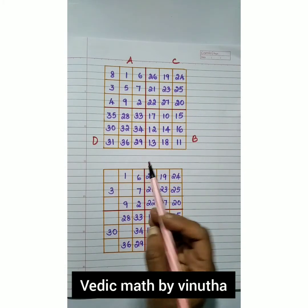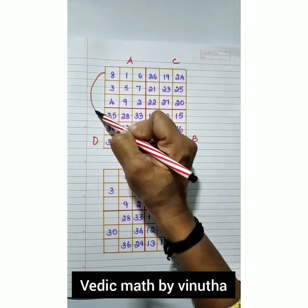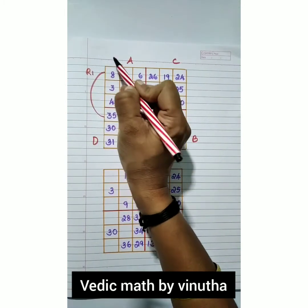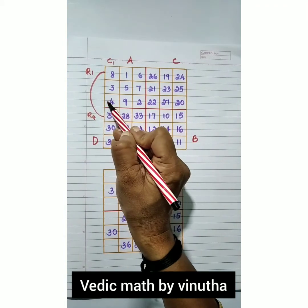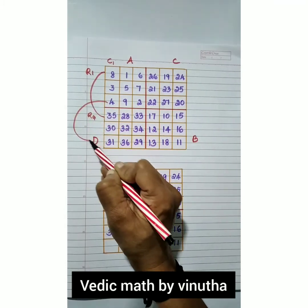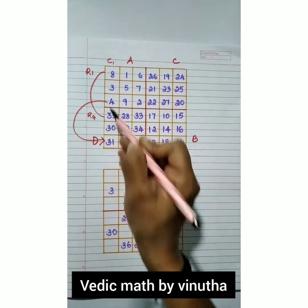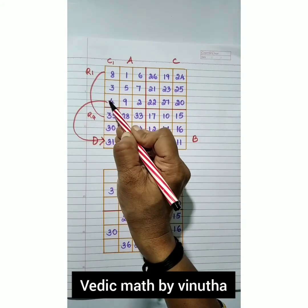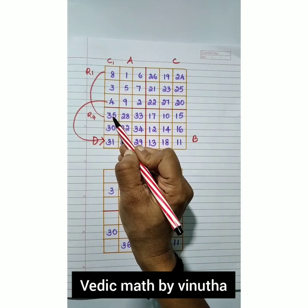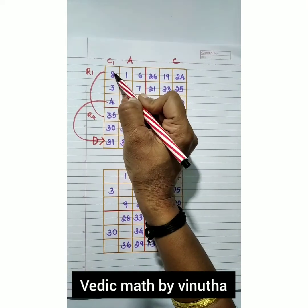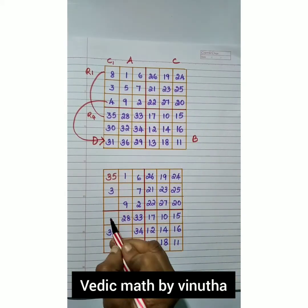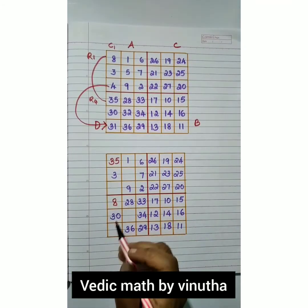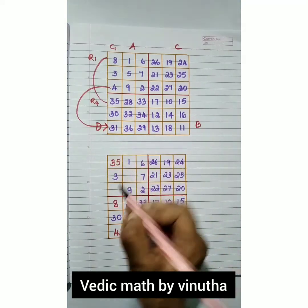Now we need to transpose certain box numbers. Row 1, column 1 box gets transposed to row 4, column 1 box, and the last box numbers get transposed similarly. For example, 8 comes to the position where 34 was written, and 35 is written where it moves — so 35 and 8 are swapped like this.